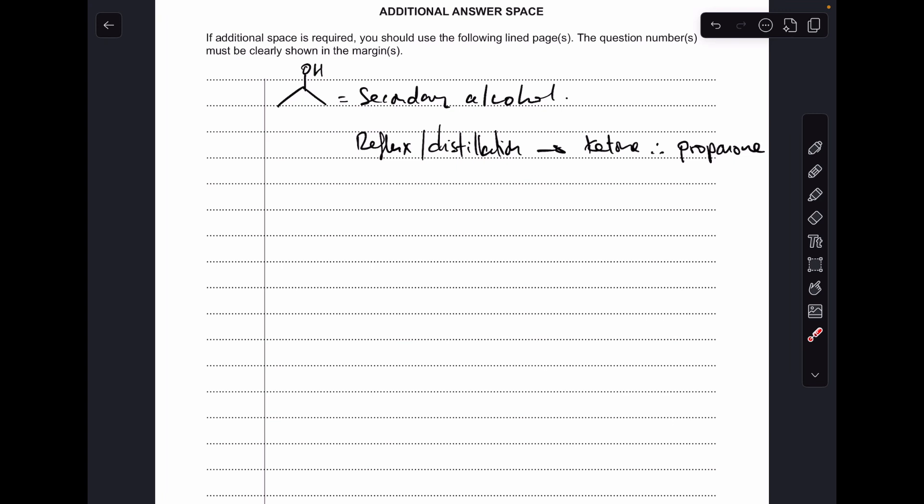Moving on to the other isomer. So propane-2-ol we're just going to say is a secondary alcohol. Doesn't matter whether you use reflux or distillation they're both going to make the same ketone product which is going to be called propanone.